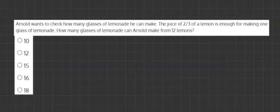Arnold wants to check how many glasses of lemonade he can make. The juice of two-thirds of a lemon is enough for making one glass of lemonade. How many glasses of lemonade can Arnold make with 12 lemons?